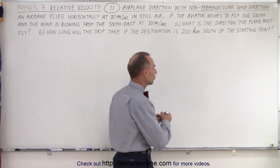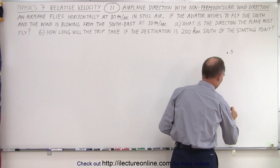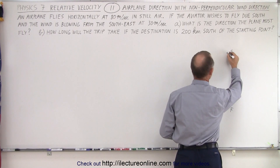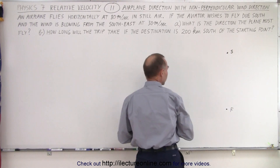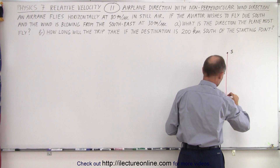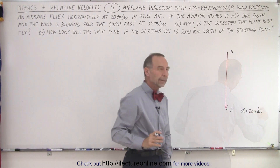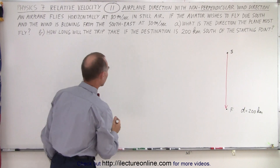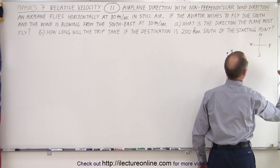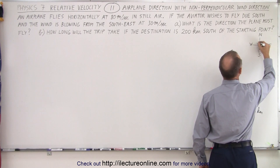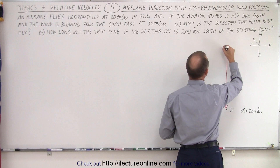First let's get a feel of what this looks like. This is the starting point and here's the finishing point — start and finish. We want to fly in this direction, so this would be the resultant of the motion of the plane. The plane wants to fly due south and the distance is 200 kilometers. A wind blows from the southeast. If we draw compass directions — north, south, east, and west — then since it comes from the southeast, it blows towards the northwest at a 45-degree angle.